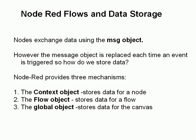Node-RED provides three mechanisms. One is the context object which stores data for a node — so only a single node. The flow object which stores data for the flow, which is a collection of nodes. And the global object which stores data for the canvas, which is a collection of flows and also a collection of nodes. We're going to look at all three methods.